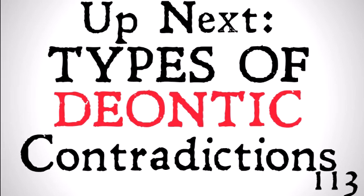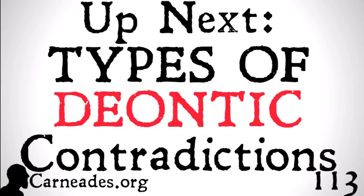So up next, we're going to talk about types of deontic contradictions. We're going to talk specifically about the difference between the omissibility of contradictions axiom and the deontic non-contradiction axiom. Watch this video and more here at carneades.org and a new video on modal logics every single day for the next three months. Stay skeptical, everybody.